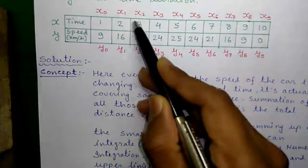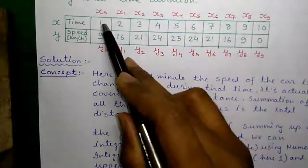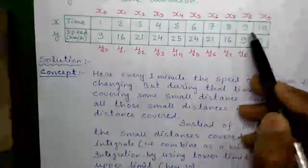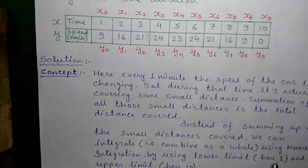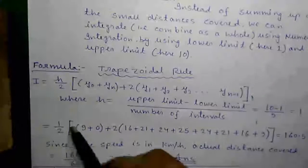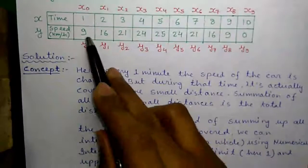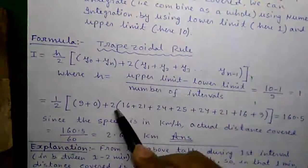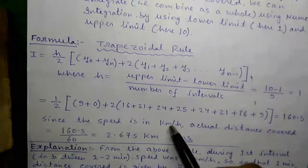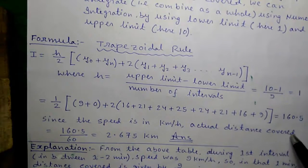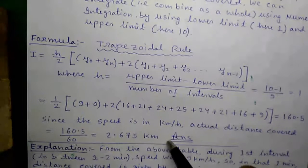The interval gap is H and the number of intervals is always lesser than the number of samples. Here 10 samples are given, so number of intervals is 10 minus 1, which is 9. I equals H over 2, which is 1 over 2, times (Y0 is 9 and Yn is 0, so 9 and 0 plus the rest of the values in between) equals 160.5. Since the speed is in km per hour, actual distance covered is 160.5 divided by 60, equals approximately 2.675 km, because integration gives an approximate answer.